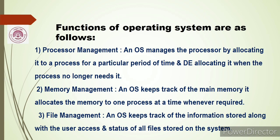Memory management: an OS keeps track of the main memory and allocates the memory of one process at a time whenever required. File management: an OS keeps track of the information stored along with the user access and status of all the files stored on the system.